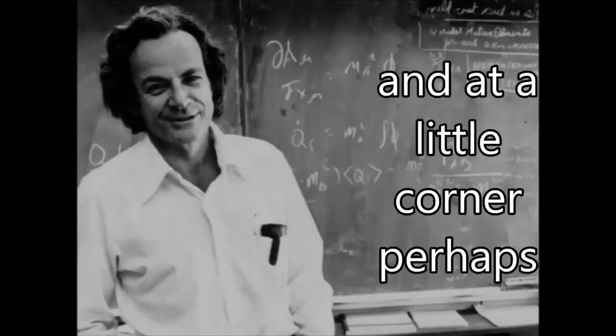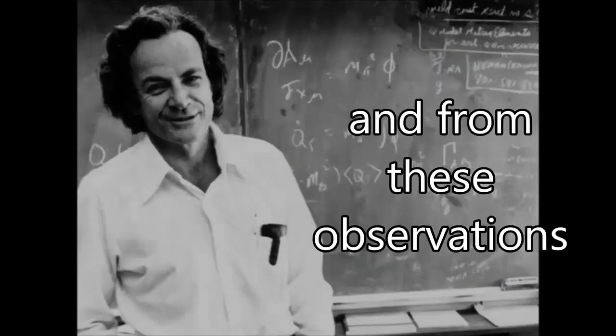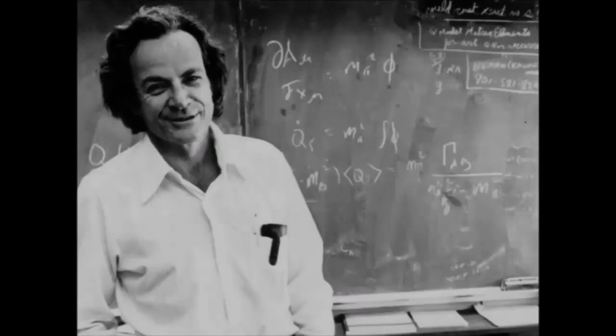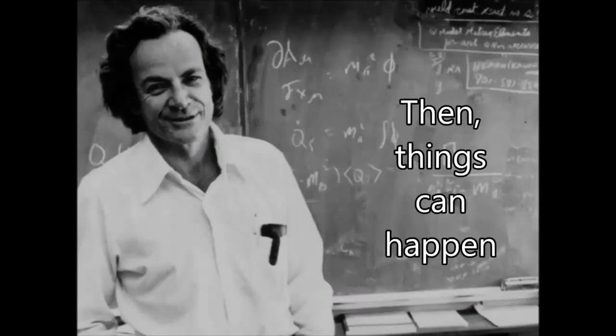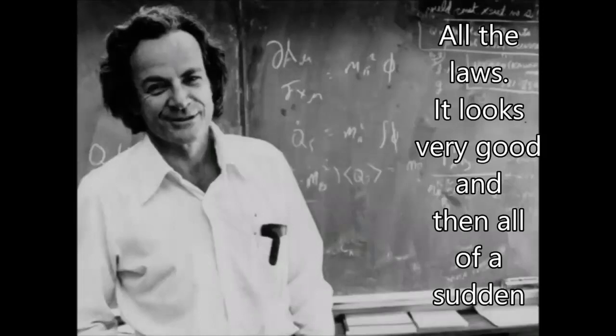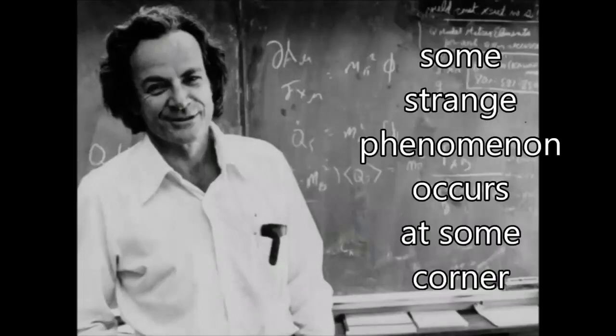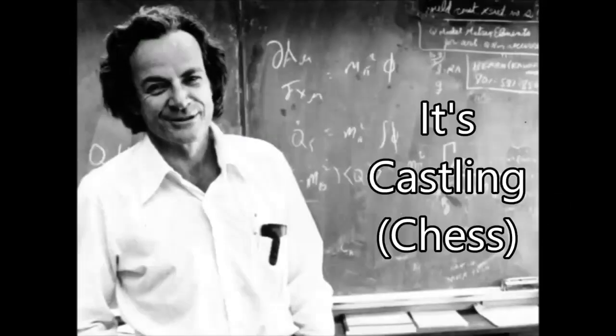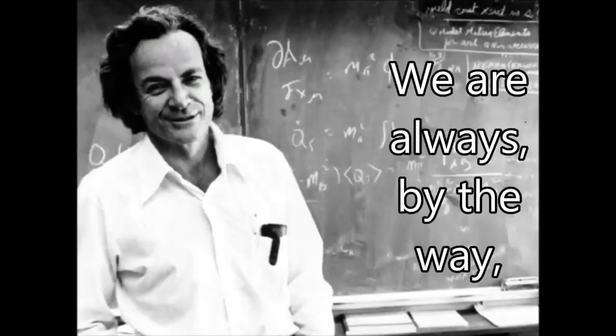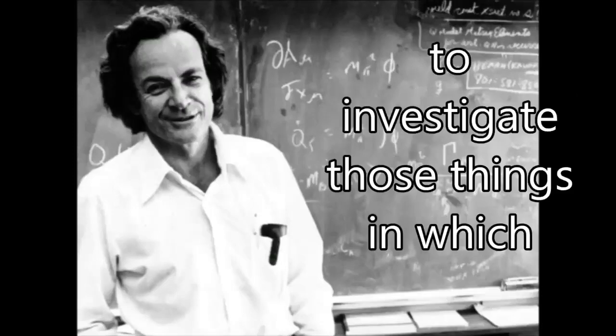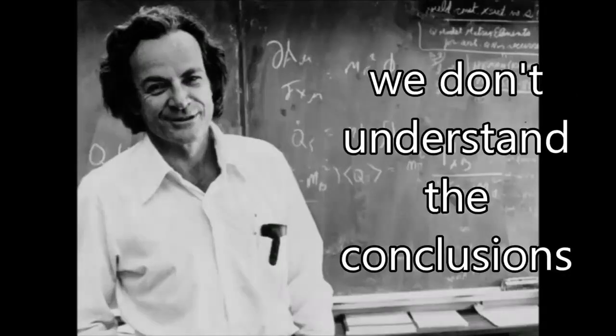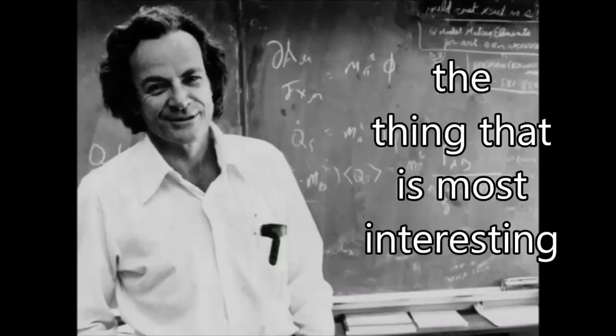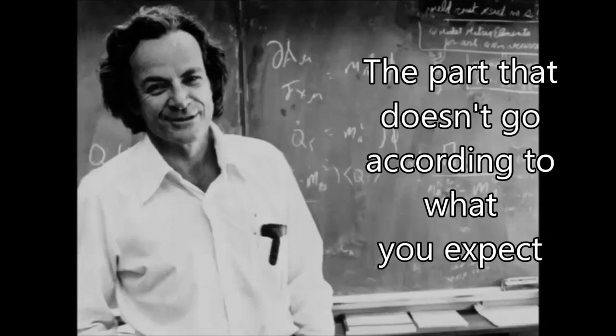From these observations, you try to figure out what the rules are of the game. Things can happen—everything's going good, you got all the laws, it looks very good—and then all of a sudden some strange phenomenon occurs in some corner, so you begin to investigate that, to look for it. It's castling. We're always, by the way, in fundamental physics, always trying to investigate those things in which we don't understand the conclusions. The thing that doesn't fit is the thing that's the most interesting, the part that doesn't go according to what you expected.